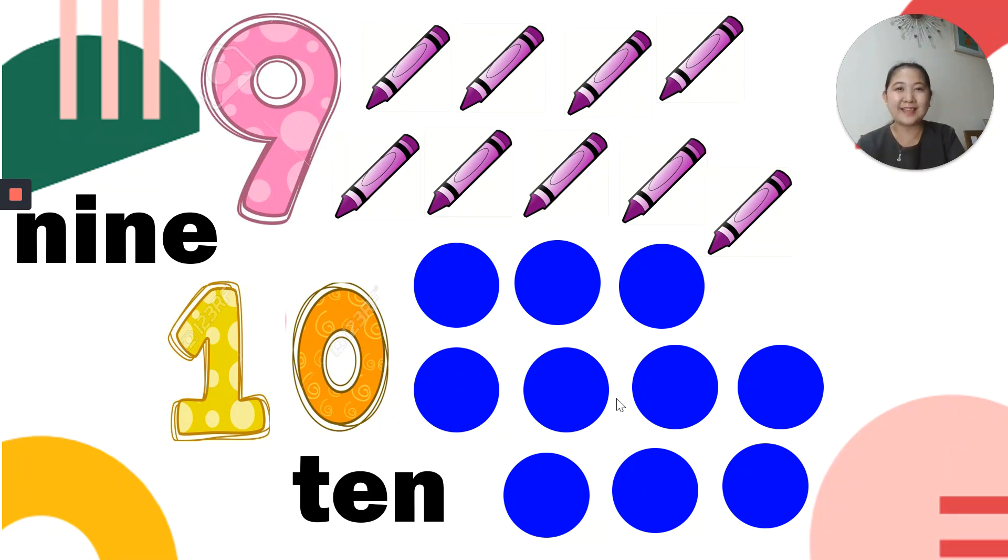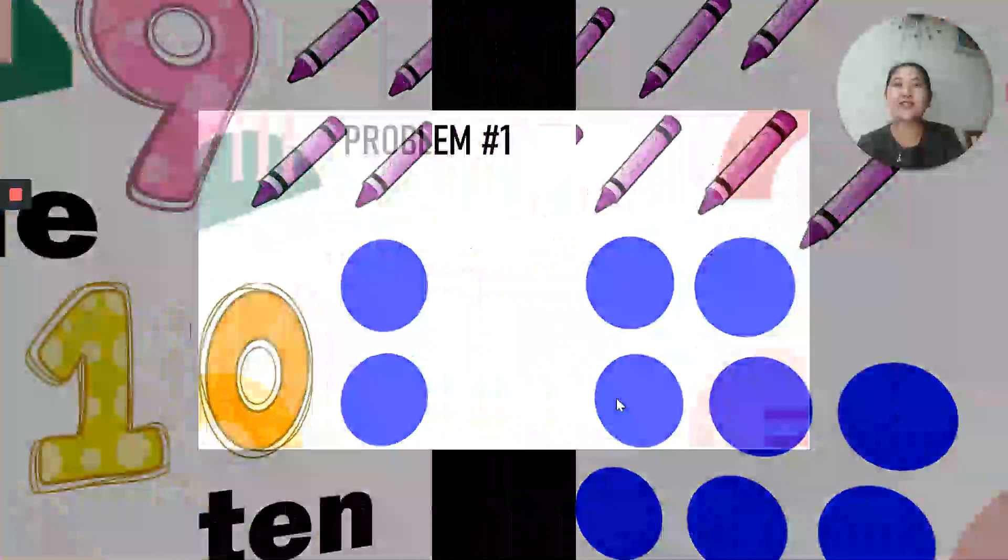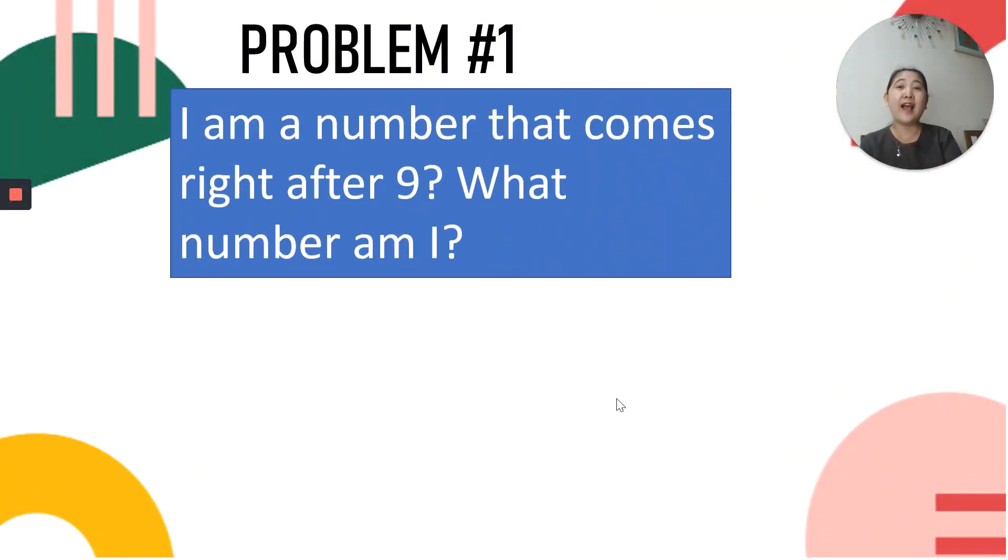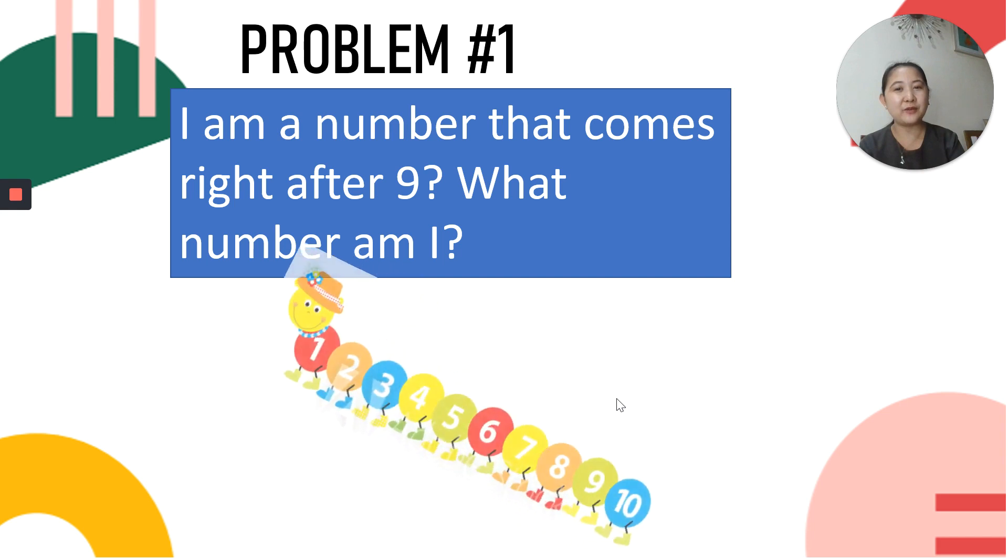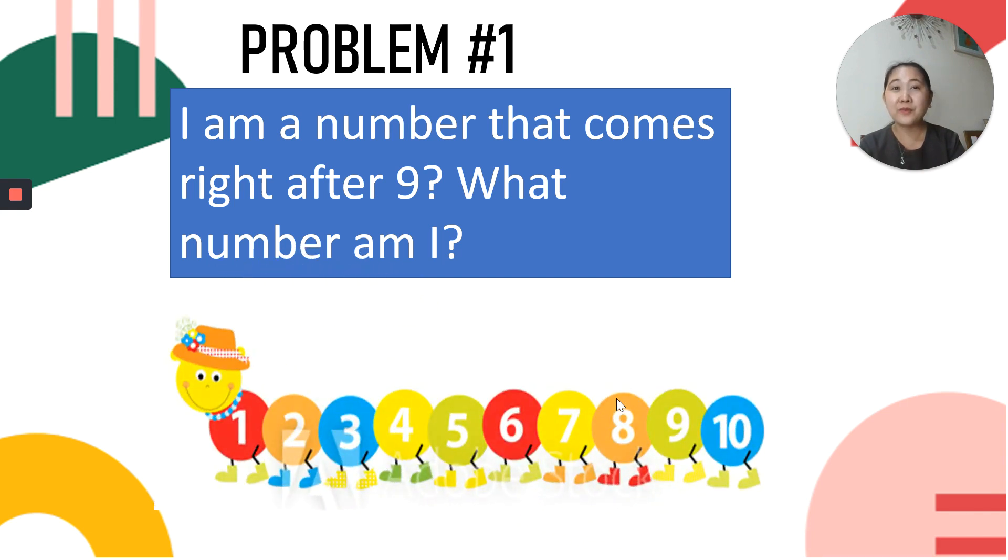Now, let's put that into practice by answering problems or word problems. Let's try problem number 1. I am a number that comes right after 9. What number am I? What do you think of the answer? Good job. I think you have an answer already.